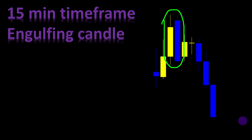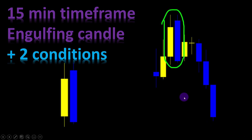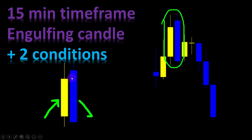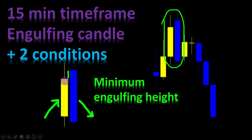We're going to add two conditions. The first one is the minimum engulfing height. If we have an uptrend followed by a bearish engulfing candle, we look at the difference between the closing price of the previous candle and the opening price of the engulfing candle. We call this distance the minimum engulfing height, and we put a minimum distance to validate the signal — this parameter is left as a variable in the code.